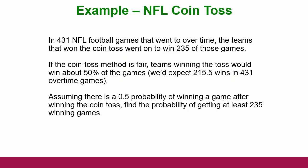Let's look at a concrete example. In 431 NFL games that went to overtime, the teams that won the coin toss went on to win 235 of them — which is more than half, but not a lot more, since half would be about 215 or 216. So if the coin toss method is fair, teams winning the toss would win about 50% of the games. We would expect about 215.5 wins assuming a 0.5 probability of winning after winning the coin toss. Find the probability of getting at least 235 winning games.